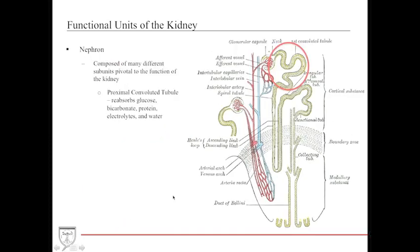After the glomerulus, the functional unit called the nephron begins. The first segment is the proximal convoluted tubule or PCT, where almost everything passed through the glomerulus must be reabsorbed. Majority of reabsorption happens here to keep the body in homeostatic balance. Substances like glucose, bicarbonate, protein, electrolytes, and water are reabsorbed in the PCT. Everything after the PCT is just fine-tuning.